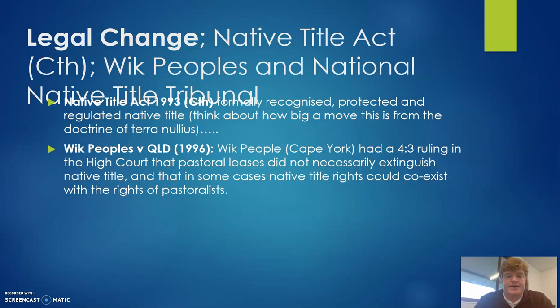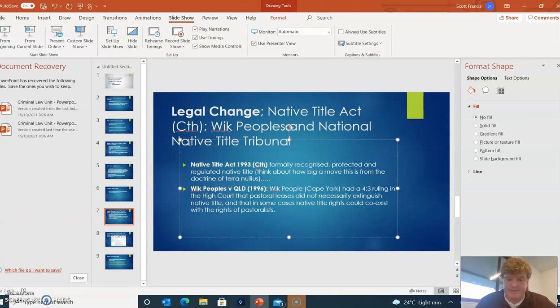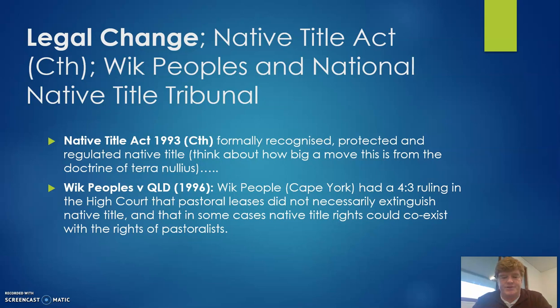How did this decision lead to actual legal change? The first of those changes is around the Native Title Act. The Native Title Act was passed in 1993, after the Eddie Mabo decision, and it formally recognised, protected, and regulated native title. If you think about the fact that only a few years before, terra nullius was the underlying doctrine — and that was now challenged and overturned — this was a big move to now have a Native Title Act.